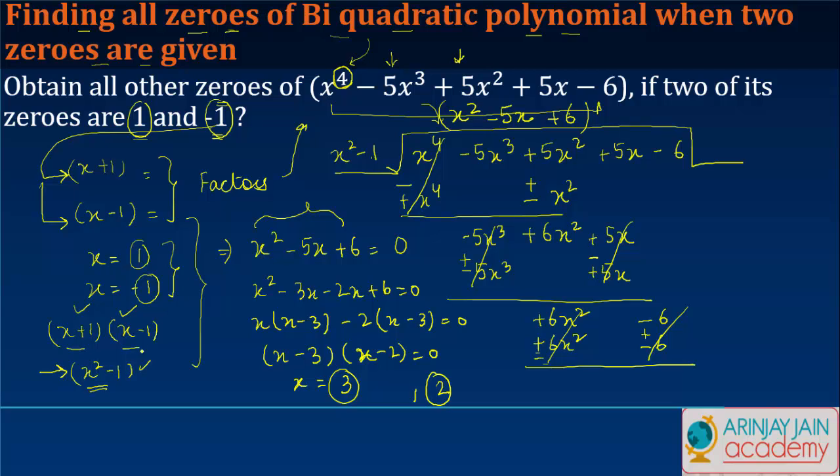If these are the factors, then I just divide the polynomial by this, and what I get is another polynomial which I just need to break down to see what are the zeros of this number.